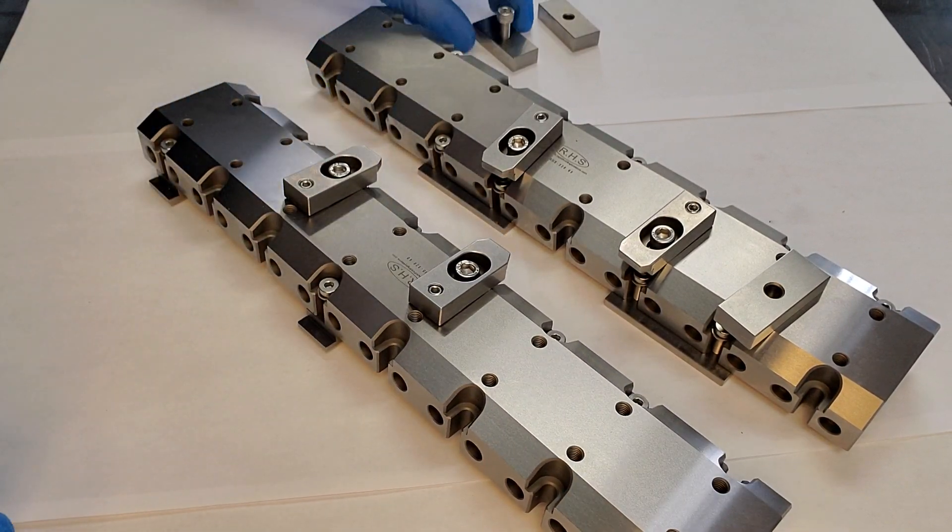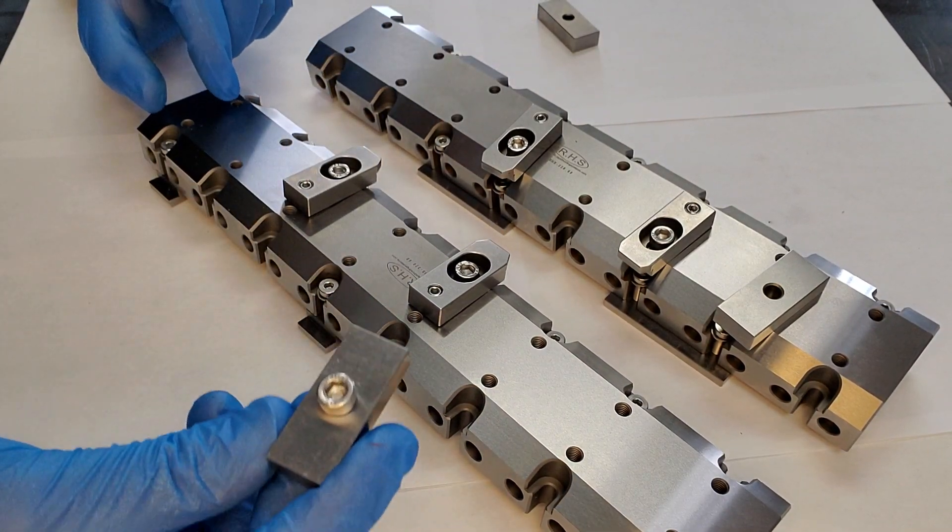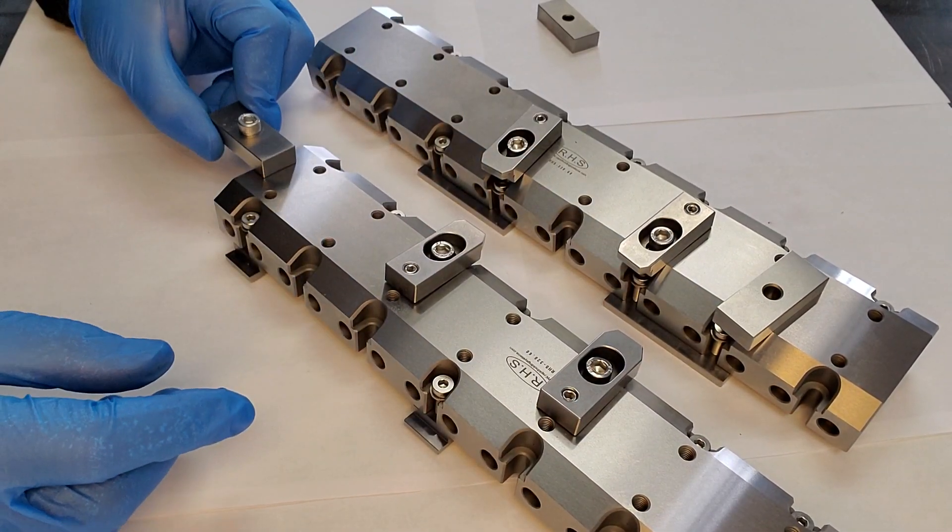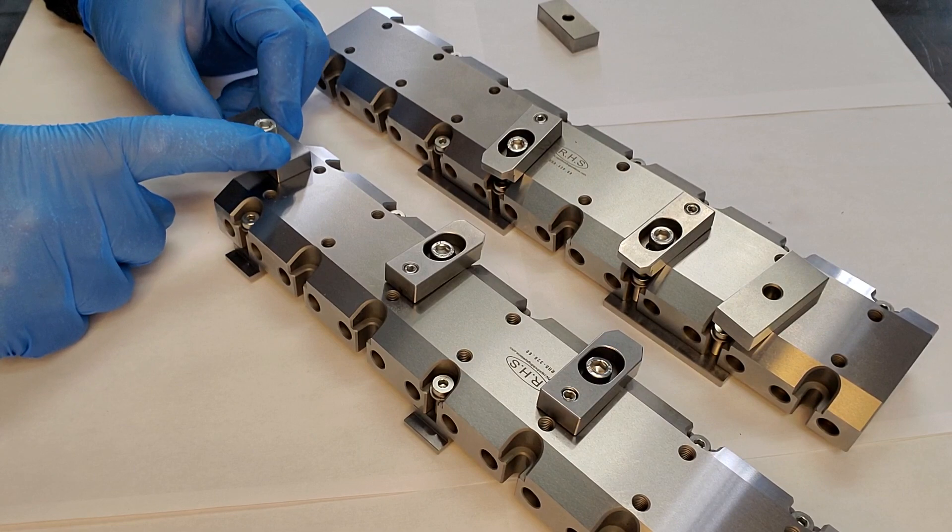They also come with these little guys which basically fit on the end of the piece, and that's how it's affixed to the clamping beam.